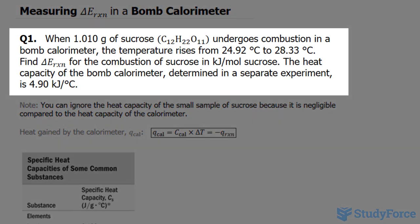Question 1 reads: when 1.010 grams of sucrose undergoes combustion in a bomb calorimeter, the temperature rises from 24.92 degrees Celsius to 28.33 degrees Celsius. Find the change in energy for the combustion of sucrose in kilojoules per mole of sucrose. The heat capacity of the bomb calorimeter determined in a separate experiment is 4.90 kilojoules per Celsius.